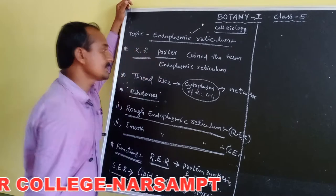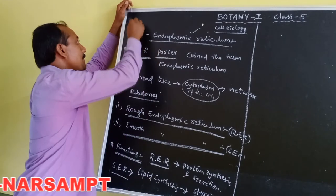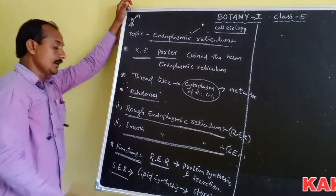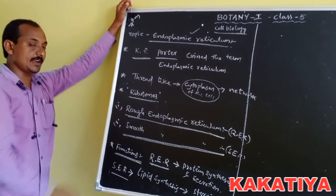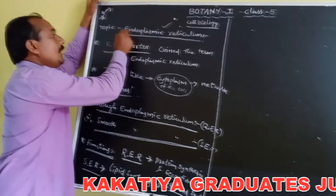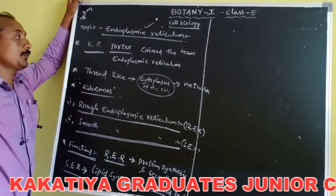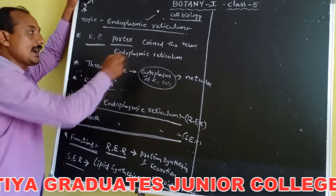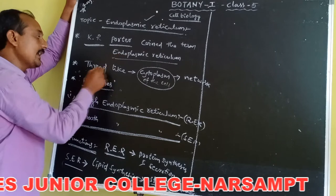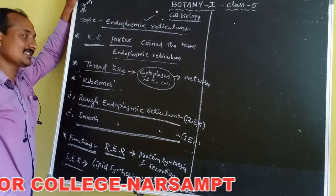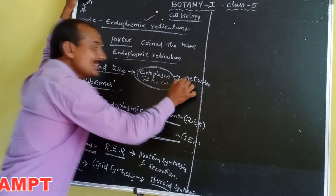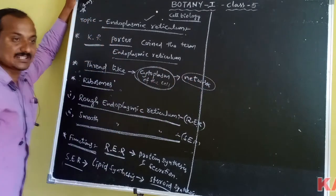This is the endoplasmic reticulum. Four marks important question: differentiate between rough endoplasmic reticulum and smooth endoplasmic reticulum. KR Porter reported and coined the term endoplasmic reticulum. Endoplasmic reticulum is a thread-like structure present in the cytoplasm of the cell, extending in the form of a network-like structure.